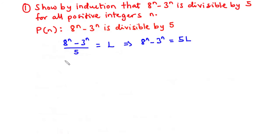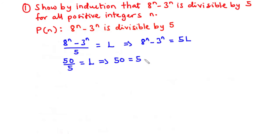For example, if we have the value 50, when 50 is divided by 5, the result is some integer l equal to 10. We can simplify this as 50 equals 5 times l. If we are able to prove this, then the original statement 8^n minus 3^n is divisible by 5, and we can conclude that P(n) is true for all positive integers n greater or equal to 1.